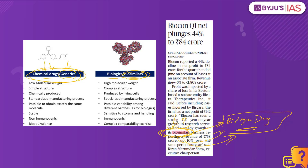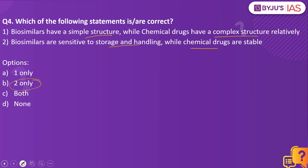Basically, chemical drugs are smaller molecules with the simplest of structures, but biologics have the most complex structures. Chemical drugs are chemically produced and mostly stable, but biologics are produced by living cells and are sensitive to storage and handling. This is why when you look into the options, it is only the second option which is right. The first option is wrong because the biosimilars have a complex structure but the chemical drugs have a simple structure.